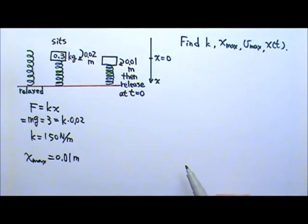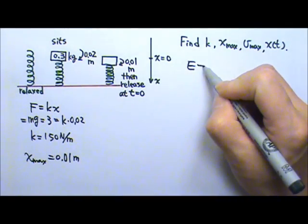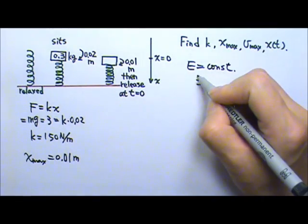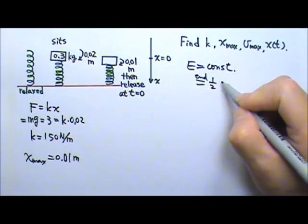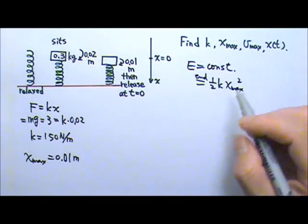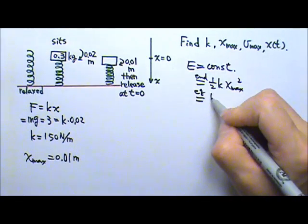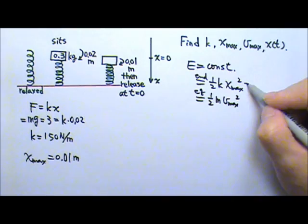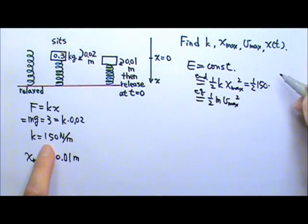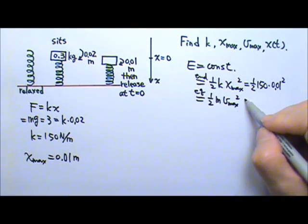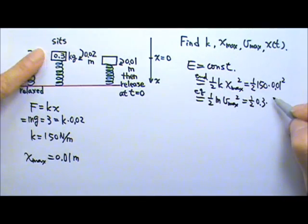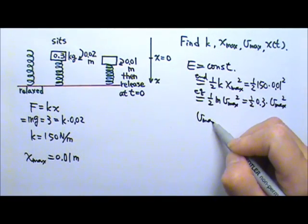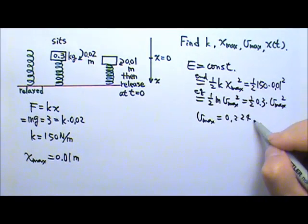To find the maximum speed, we can use conservation of energy. The total mechanical energy is the same throughout the oscillation. At the end point, all of the energy is in potential energy: one-half k times amplitude squared. At the equilibrium, all of the energy is in kinetic energy: one-half m v-max squared. Setting these equal, with k equals 150, amplitude equals 0.01, and mass equals 0.3, we find v-max equals 0.224 meters per second.